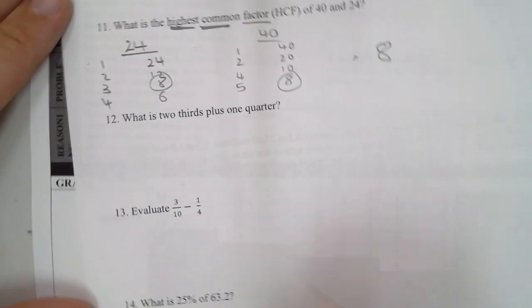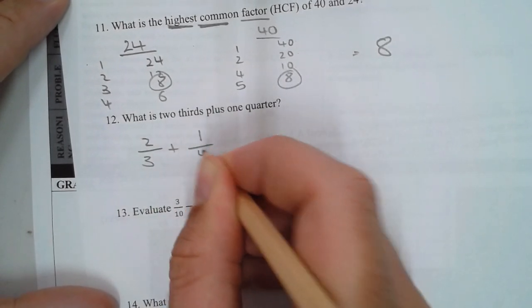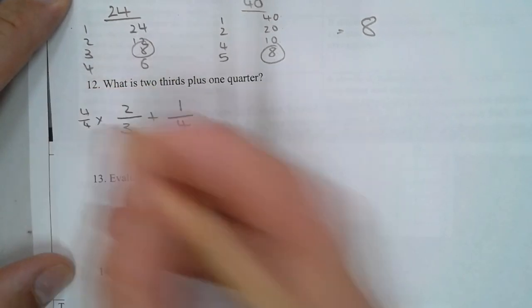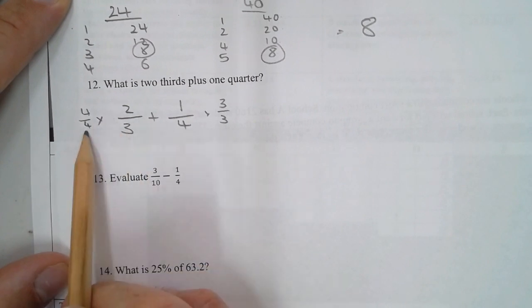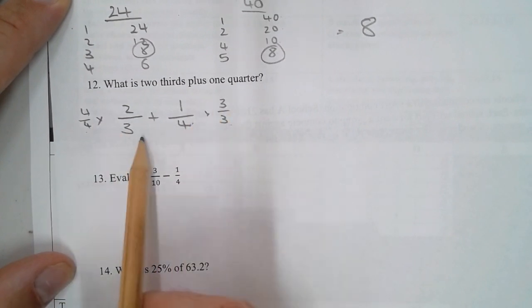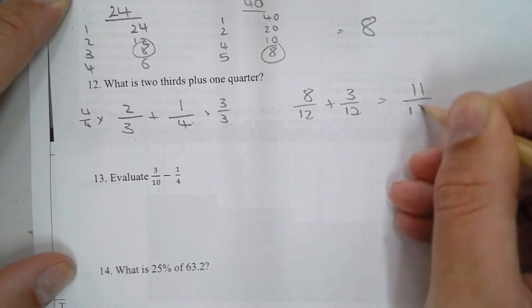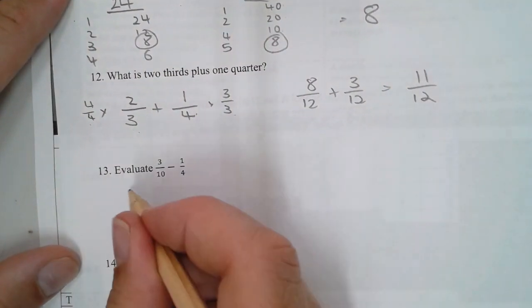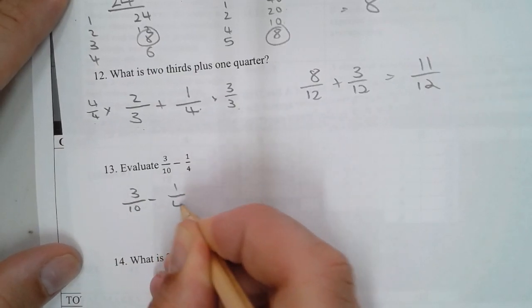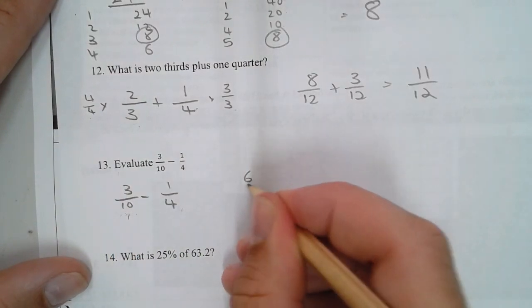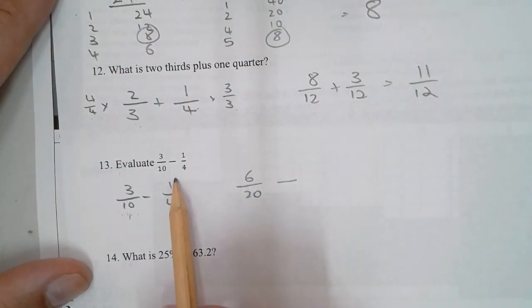Number 12: what is 2 thirds plus 1 quarter? We can't add fractions if the denominators are different. Times this one by 4 over 4, times this one by 3 over 3. We're going to have 8 over 12 plus 3 over 12, which is 11 over 12. Number 13: we're subtracting. To get to 20, we're multiplying by 2 over 2 to get 6 over 20, and by 5 over 5 to get 5 over 20. Your answer is 1 out of 20.